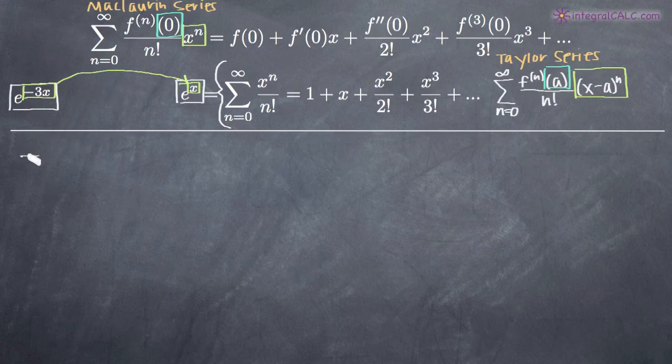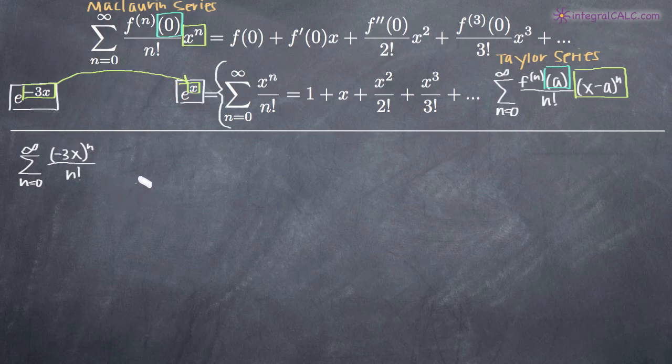So we're going to have the sum from n equals zero to infinity of x to the n over n factorial. Well again, we can plug in negative 3x for x so we'll get negative 3x to the n all over n factorial. So we can plug that in there.